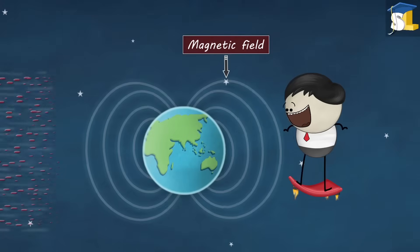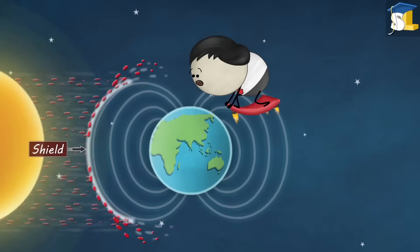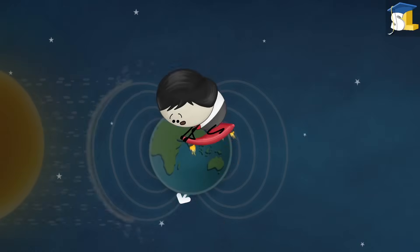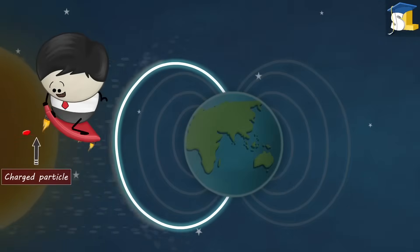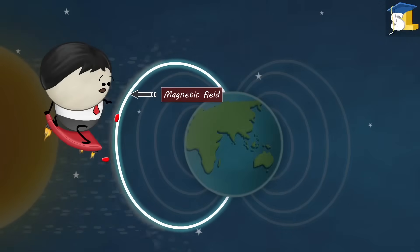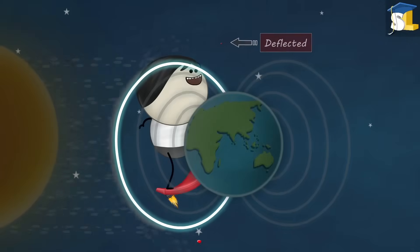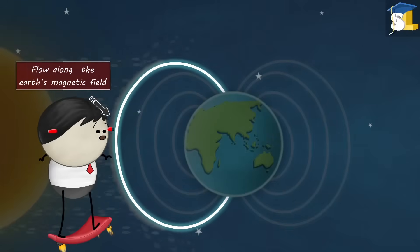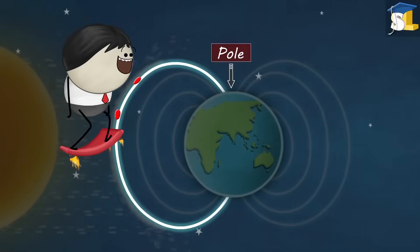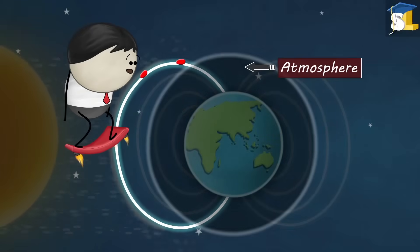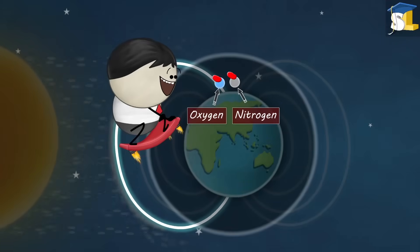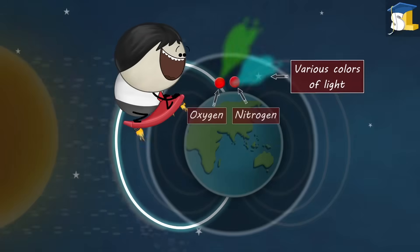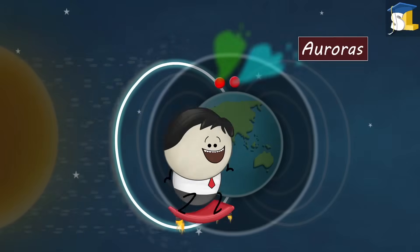The earth's magnetic field acts like a shield and protects us. Its field lines appear to emerge from the south pole and merge into the north pole. Now, when the charged particles hit our magnetic field, most of them get deflected. However, some of them flow along the earth's magnetic field lines to the poles and reach our upper atmosphere. Here, these particles collide with oxygen and nitrogen. This causes them to give off various colors of light which are called auroras.